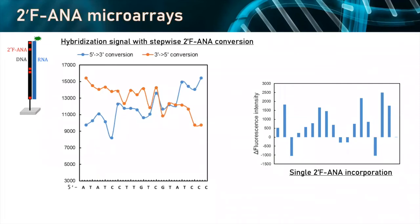We can also look at the data more manually: for instance, what happens to the hybridization signal when we add FANA stepwise from the 5' end or from the 3' end? We can monitor this to see how it looks. Those two curves — 5' to 3' conversion stepwise and 3' to 5' conversion stepwise — show that overall it does increase, which correlates well with the story that more FANA improves hybridization efficiency. But clearly this is not a linear increase — we have bumps and dips.